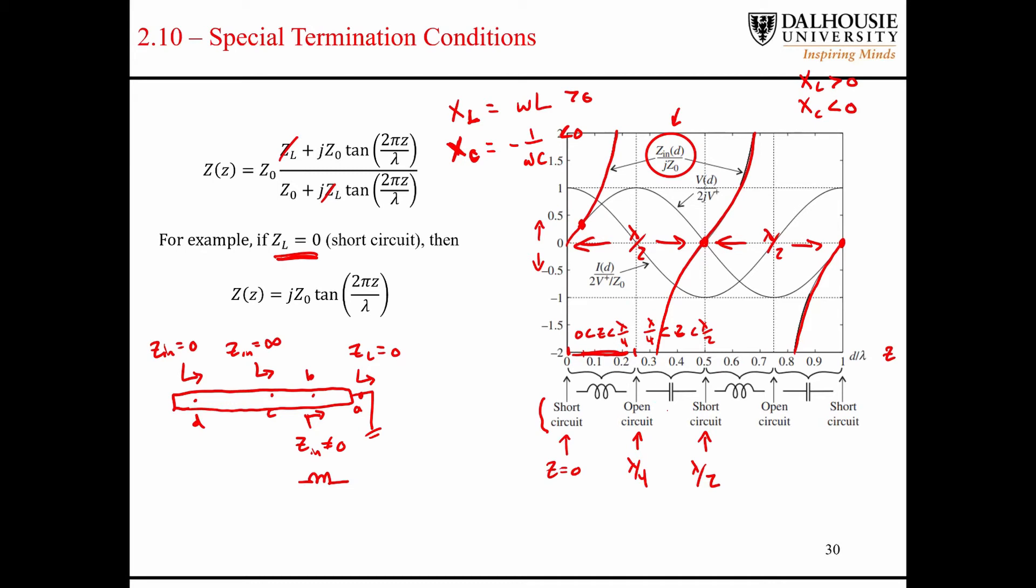When we get to a quarter wavelength, which is point C, so I guess point A, point B, point C, and then point D. When we get to point C, we look in, we see an open circuit. We have another point here called E. Say right there, point E. We take a measurement of the impedance looking in here, and we actually see a capacitor.